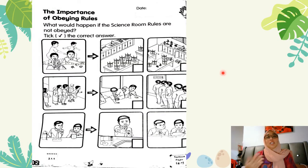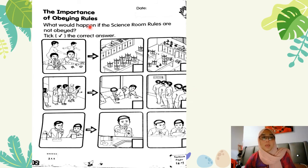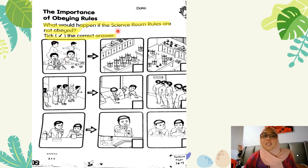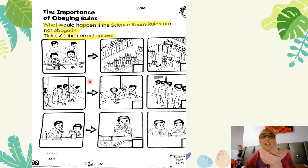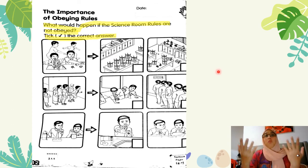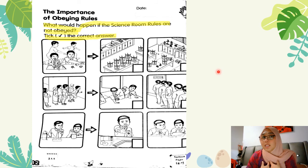Untuk latihan yang seterusnya, muka surat 12: the importance of obeying rules. What would happen if the science room rules are not obeyed? Tick the correct answer. Apa akan terjadi jika peraturan bilik sains tidak diikuti? Awak tick jawapan yang betul. Latihan-latihan ini, kamu buat dan hantar kepada saya melalui telegram. You must do all the worksheets and send it to me through my telegram.